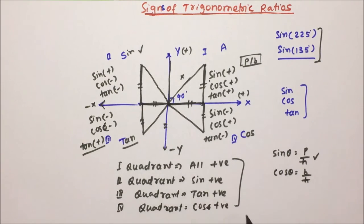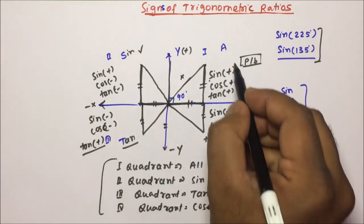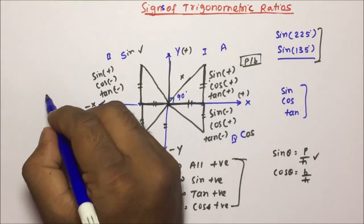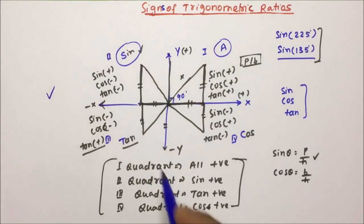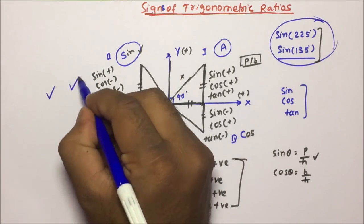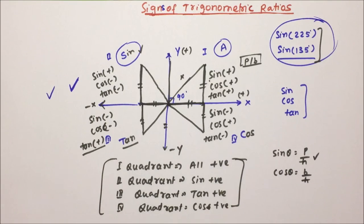If you remember this, calculating these values will be very easy. Everybody knows the mnemonic A-S-T-C: first quadrant all ratios are positive, second only sine, third only tan, and fourth only cos. In the next video, I will teach you how to calculate these values. Please keep this in mind before watching the next video. Thanks a lot for watching — I hope you understood how to determine the signs of the Trigonometric ratios.